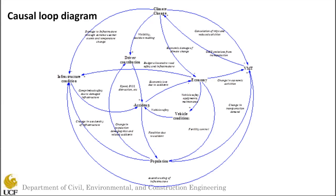The next loop is: climate change → driver contribution → accident rate → economy → VMT → climate change. Increasing frequency of extreme weather conditions — whether rainfall, fog, or snow — will increase the driver's contribution to traffic accidents due to negative impacts on factors like visibility and decision making. This will increase accident rates, which will impact the economy and VMT. The decrease in VMT will impact climate change — hence, here we have another causal loop.